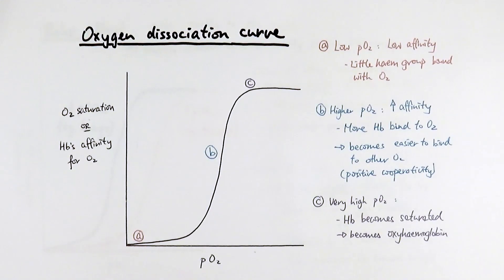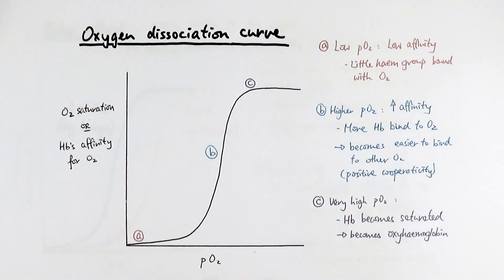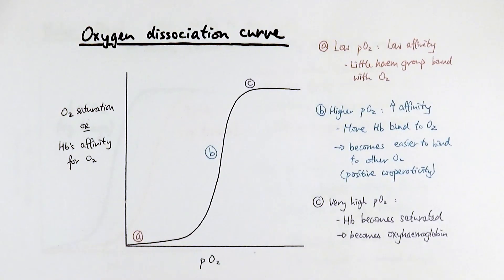As a quick recap: the oxygen dissociation curve shows how oxygen is released from or taken in by hemoglobin at different situations. At a low partial pressure of oxygen, very little hemoglobin is bound to oxygen to start with. But after the first oxygen is bound, because of positive cooperativity, more hemoglobin binds to subsequent oxygen molecules even more easily — hence the affinity increases rapidly. After the third subunit is bound, due to positive cooperativity, hemoglobin very quickly reaches 100% saturation and becomes oxyhemoglobin. This is the sigmoid curve that shows how that works.